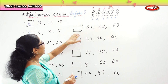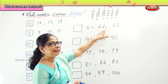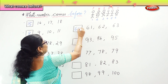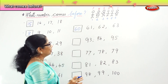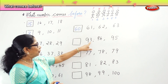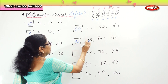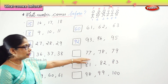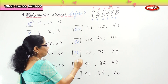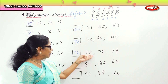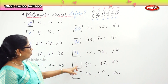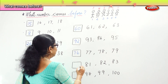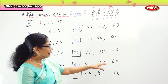Now some more exercises. Look at 61, 62, 63 — here it is 1, so before that is 60. Excellent: 60, 61, 62, 63. Next we have 93, 94, 95 — before 3 is 2, so 92. Very good: 93, 94, 95. Next we have 77, 78, 79 — what number comes before 77? 76. Then count forward: 76, 77, 78, 79. What number comes before 81? 81, 82, 83 — before 1 is 0, so 80. Very good: 80, 81, 82, 83.